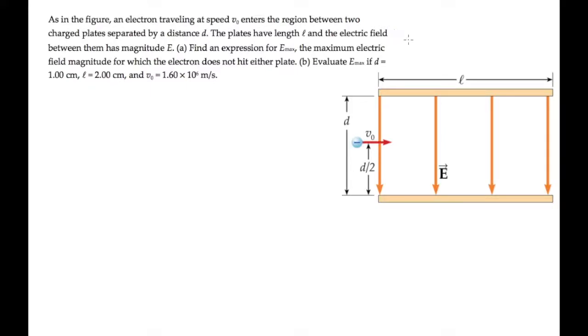When the electron is in the region between the two plates, it experiences a force equal to its charge times the electric field. Because the electron's charge is negative, that force is in the direction opposite the electric field, so it's directed straight up.